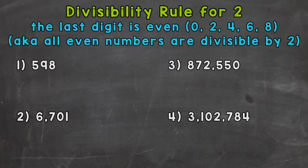When it comes to divisibility, we're checking to see if we can divide without getting a remainder, so the given numbers work out exactly. The rule for 2: we need to see if the last digit is even — a 0, 2, 4, 6, or 8. That means that number is even, and all even numbers are divisible by 2.